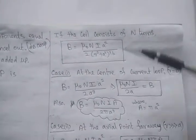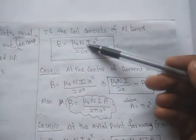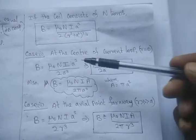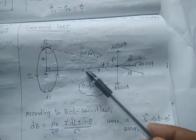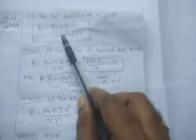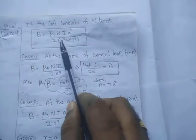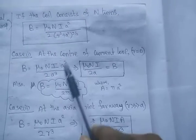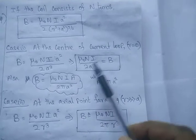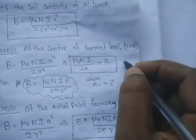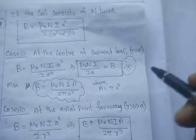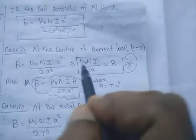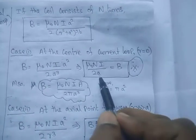Similar to the infinite long wire, we have some special cases. If there are N number of turns, just put N in the formula. For the first special case — at the center of the loop — R = 0. Substituting R = 0, we get B = μ₀ N I A² / [2 × (A²)^(3/2)] = μ₀ N I A² / (2 A³) = μ₀ N I / (2A). So the magnetic field at the center is B = μ₀ N I / (2A), where A is the radius of the circular loop.